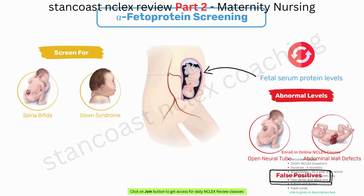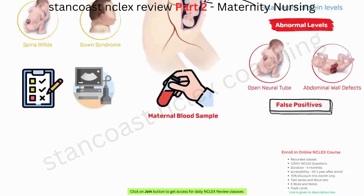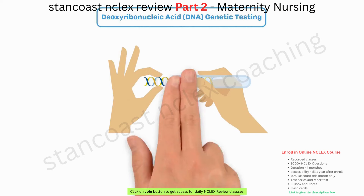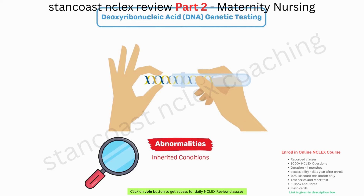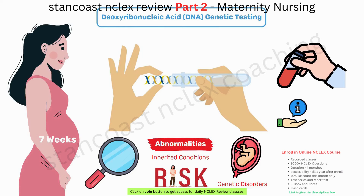Alpha-fetoprotein screening entails a maternal blood sample taken between 16 and 18 weeks of gestation, followed by further evaluation and ultrasound examination for elevated levels. DNA genetic testing is employed to identify abnormalities related to inherited conditions and to determine the risk of having a fetus with specific genetic disorders. This testing can be conducted as early as 7 weeks of gestation using a blood sample, offering valuable information to inform decision-making.